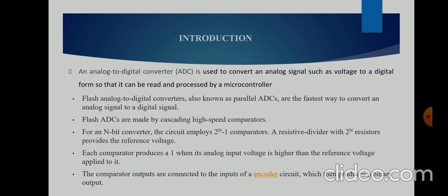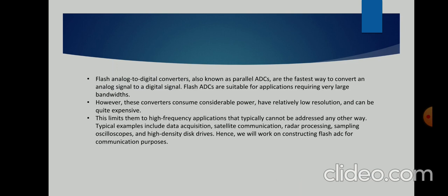For a 5-bit design we have used 2^5 minus 1, that is 31 TIQ comparators in this project. The logic used is that zeros and ones are produced by the comparison of the reference and input voltage in the Flash ADC. We have an encoder circuit which converts the thermometer code to binary code. Since converters consume high power and are also expensive, we have introduced TIQ comparators in this project.